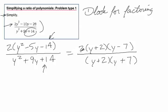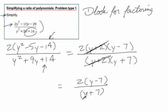Then, now that we've got everything factored, we notice that we have common factors right here. y plus 2 and a y plus 2. And so then our final answer, 2 times y minus 7 over y plus 7.